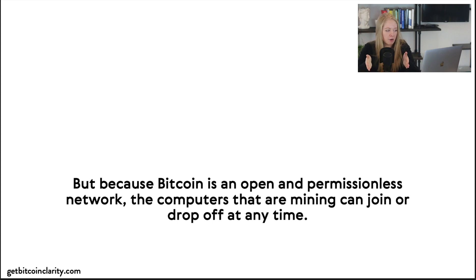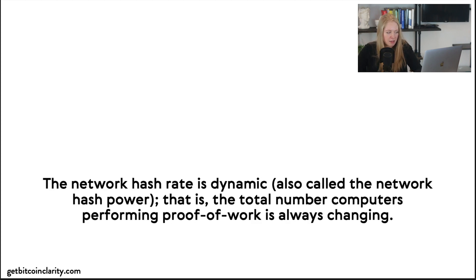So how do we stabilize this? Well, first let me get the terminology correct. We call Bitcoin an open and permissionless network, and it's called that because miners can join and drop off at any time. The network hash rate is dynamic, so this is also called hash power. Hash rate and hash power—interchangeable words—that is the total number of computers performing proof of work is always changing.